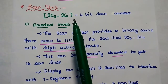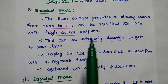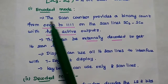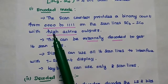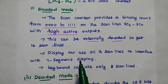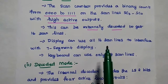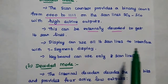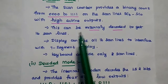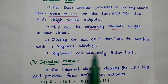The scan unit has 4 scan lines SC0 to SC3 and is also known as a 4-bit scan counter. There are 2 modes available: encoded mode and decoded mode. In encoded mode, it provides all binary count values from 0000 to 1111 with high active outputs, and can be externally decoded to get 16 scan lines. Display can use all 16 scan lines to interface with a 7-segment display, while the keyboard can use only 8 scan lines.